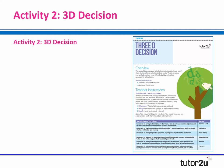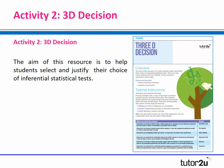Moving on to activity two, which is where the important activities really fit in. The second activity is called the 3D Decision, and this really underpins the rest of the activities. The aim of this resource is to help students select an appropriate test and, in particular, justify their choice of test, which is what's often asked in the exam.